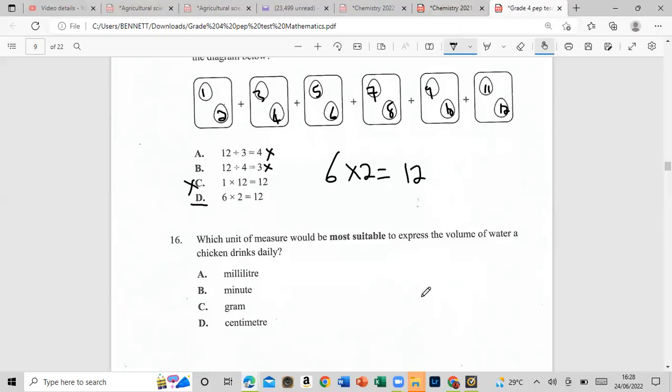Which unit of measure would be most suitable to express the volume of water a chicken drinks daily? Is it milliliter, minute, gram, or centimeter? What is used for liquid measuring? The answer would be A, milliliter. This would be for liquid, this would be time, gram is for weight, and centimeter is for length. So our answer would be A, milliliter. It could have been a liter.